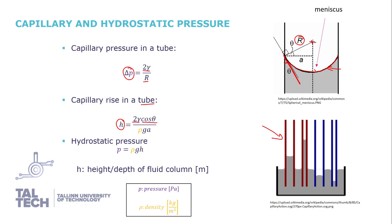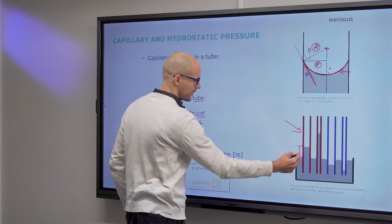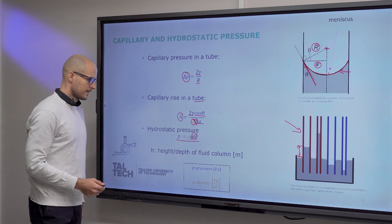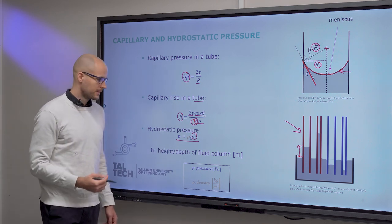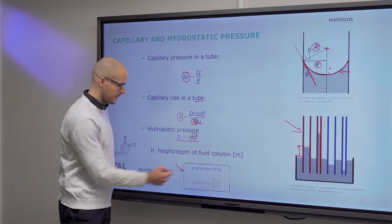The capillary rise is defined in a tube, but the drawing is also possible to imagine as parallel plates. Works the same as a tube. Capillary rise inside the tube is defined as such. Depends on the surface tension, the cosine of the contact angle, and then here comes our first material property, which is density. And then there's also a bunch of forces playing a part. Hydrostatic pressure is defined as such. This is the height of the rise. The height or depth of the fluid column.